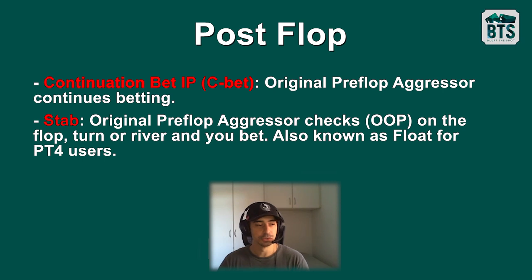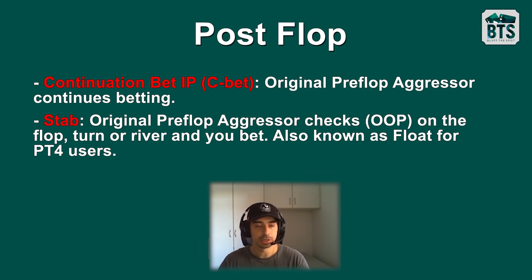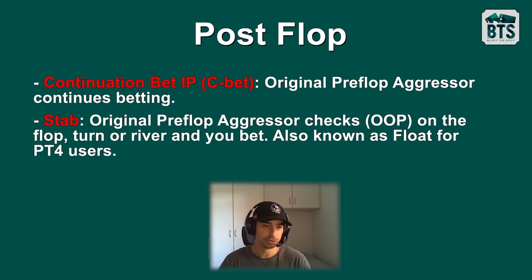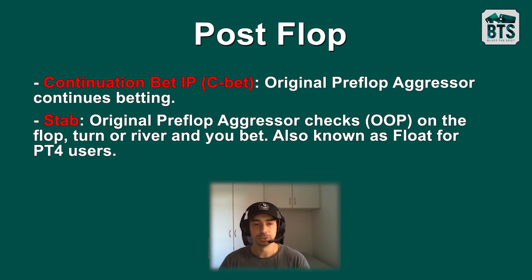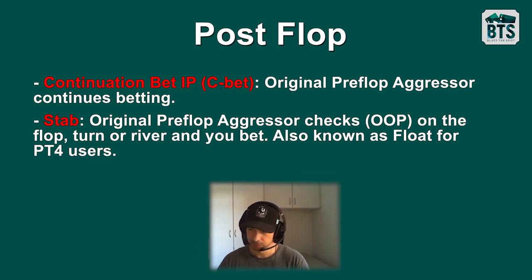Postflop, all those terms of two-bets and three-bets are reset — everything that happened preflop is reset. A continuation bet, which even recreational players already know, means the original preflop aggressor continues betting on the flop, turn, or river. The next one people start struggling with is the stab. The stab is when the original preflop aggressor checks — usually out of position — on the flop, turn, or river, and then you take the lead and bet in position against him. Also known as 'float' for PT4 users.